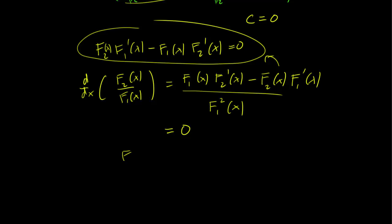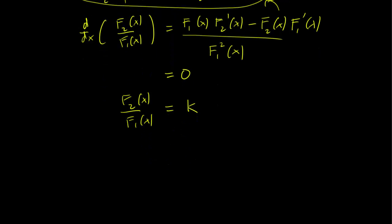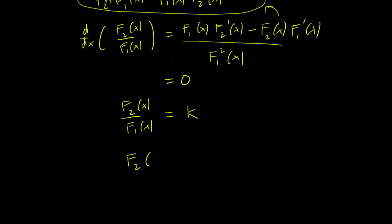But this implies that f2 x over f1 x is a constant, let's call it k, and therefore, one eigenfunction is just a constant multiple of the other, just as we had set out to prove.